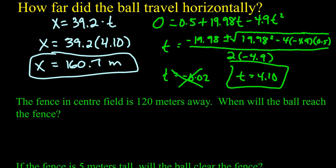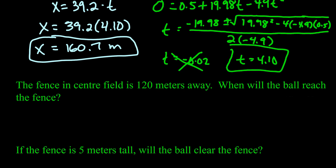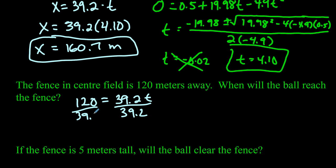Another type of question: the fence in center field is 120 meters away. When will the ball reach the fence? Since 120 meters is the horizontal distance, we set 120 equals 39.2 times t. Dividing both sides by 39.2, we get t equals 3.06 seconds. So it takes 3.06 seconds for the ball to reach the fence.